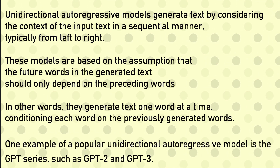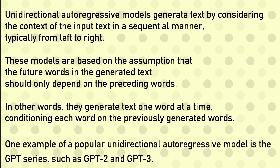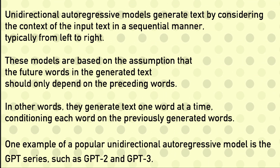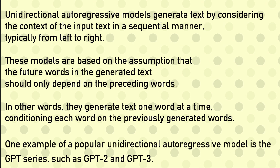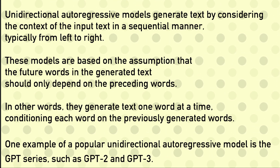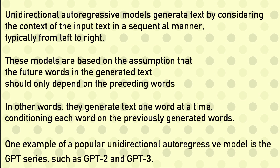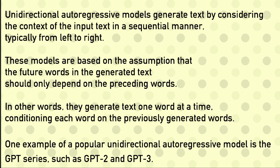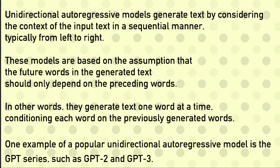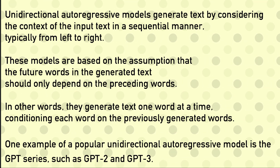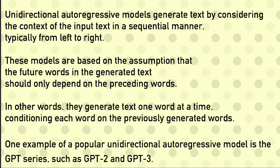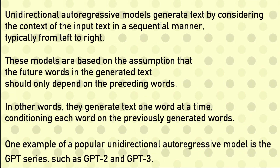To start with, uni-directional auto-regressive models — for example, your GPT-2 and GPT-3 of the world — these are uni-directional auto-regressive models. They generally generate text by only considering the context of the input in a sequential manner, so from left to right. The model attempts to predict what is going to be the next word in the right direction. These models are based on the assumption that future words in the generated text should only depend on the preceding words.